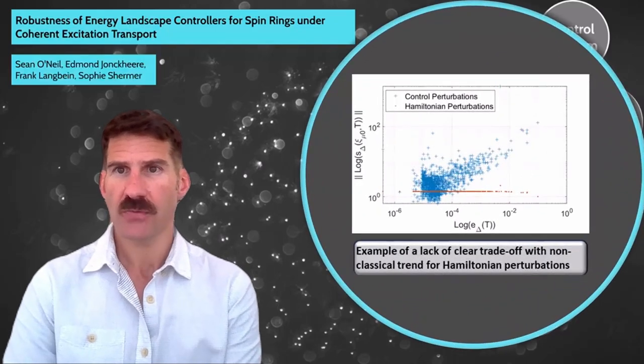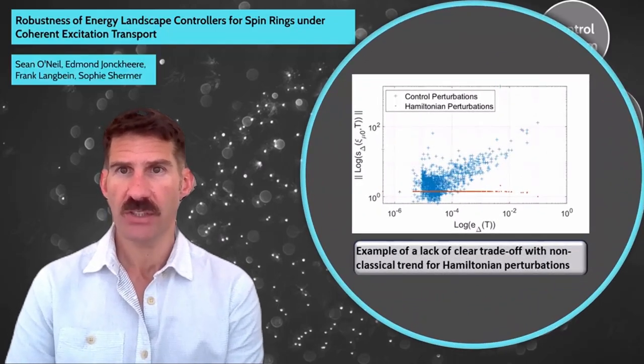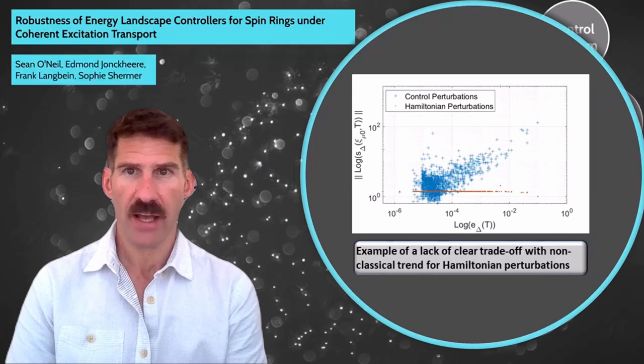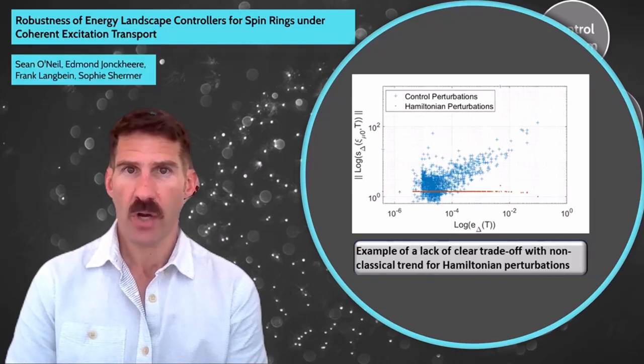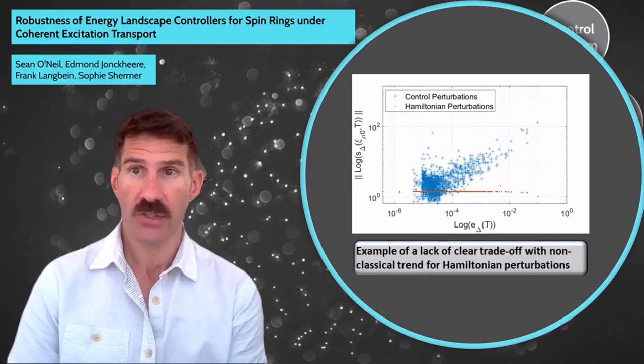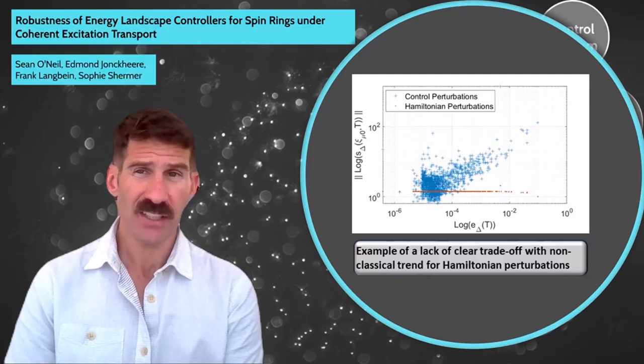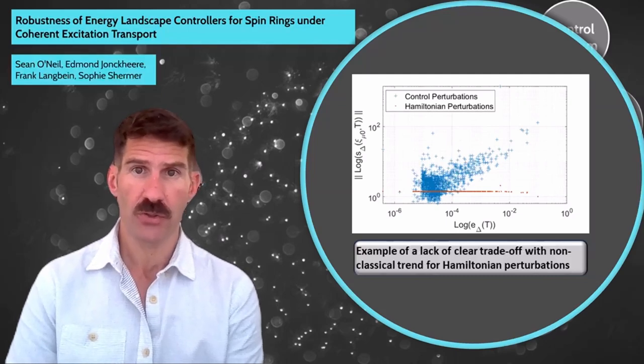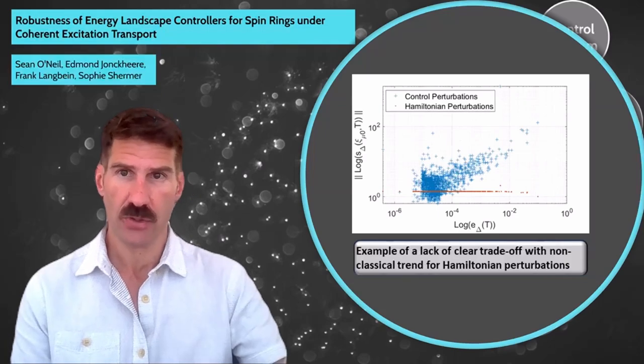However, in this case, for a six-ring undergoing localization, in other words keeping the spin at the initial state, we see the opposite trend, where as the performance is degraded, the robustness is also degraded. This indicates that the best-performing controllers are also the most robust, which is a very non-conventional result.